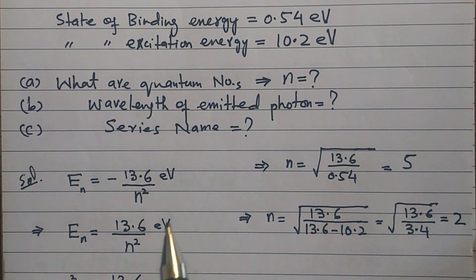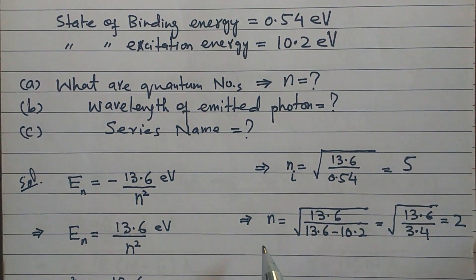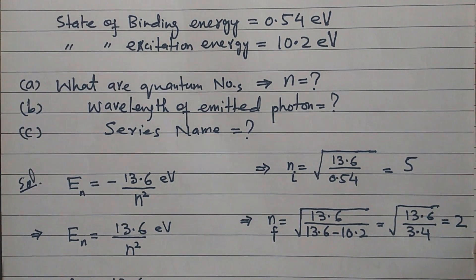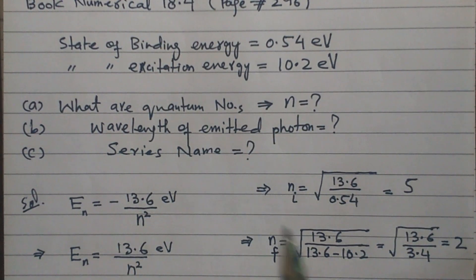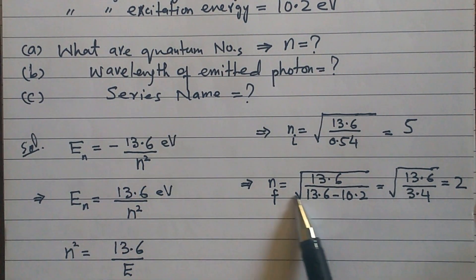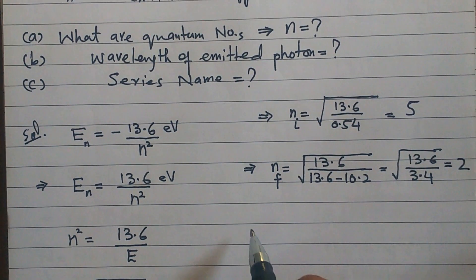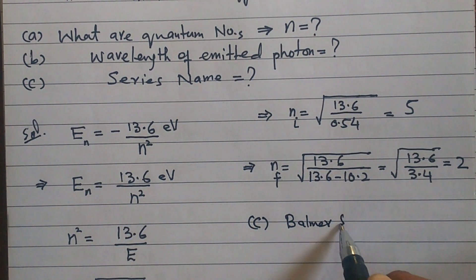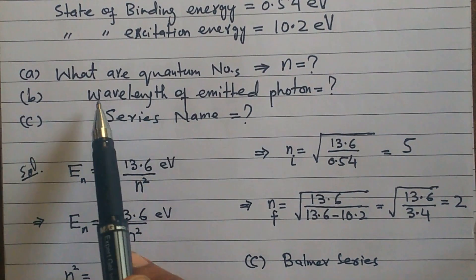So the atom was in the state n = 5 — this is the initial state — and it moved to n = 2, which is the final state. As I explained in the theory video for Chapter 18, the name of a spectral series is determined by n_final. Since n_f = 2, the series is the Balmer series. That is the answer to part C.